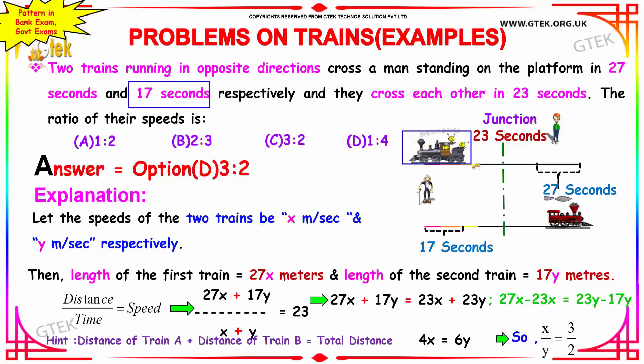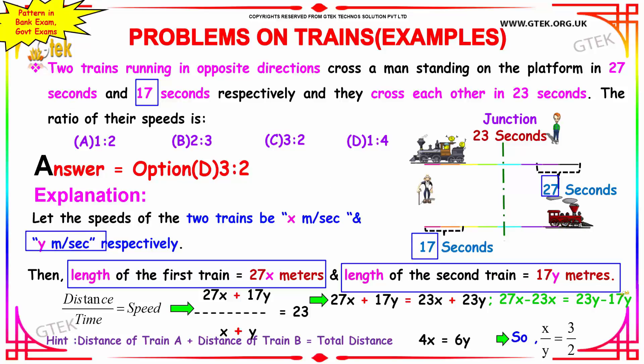The speed of the two trains be X meter per second and Y meter per second. Length of the first train is equal to the timing to cross the person, 27 into X meters. That is the length of the first train. Length of the second train is equal to the time 17 seconds, 17 into Y meter per second. The length of the second train is 17Y meters.